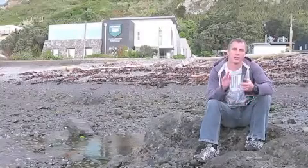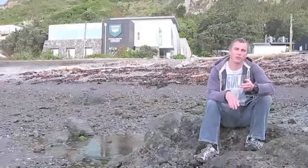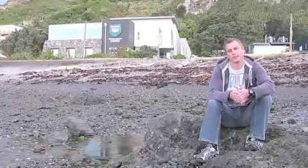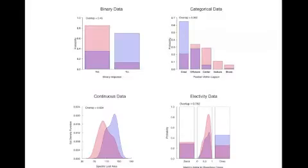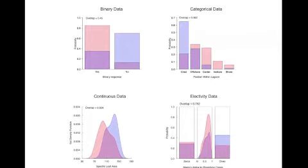For example, binary data, categorical data, continuous data, and proportion data. Using appropriate transformations and density estimation techniques, each data type gives rise to equivalent measures of niche overlap ranging from zero, or no overlap, through to one, complete overlap.